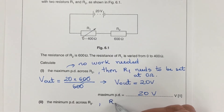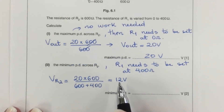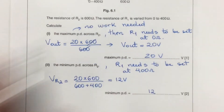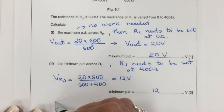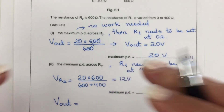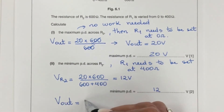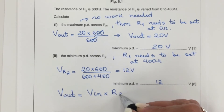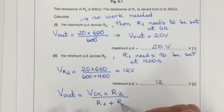The minimum voltage across R2 occurs when R1 is set at its maximum of 400 ohms. Using the potential divider formula: Vout = Vin × R2 / (R1 + R2) = 20 × 600 / (400 + 600) = 20 × 600 / 1000 = 12 volts. So the minimum PD across R2 is 12 volts.